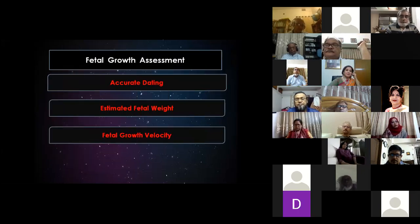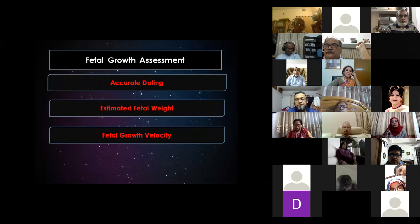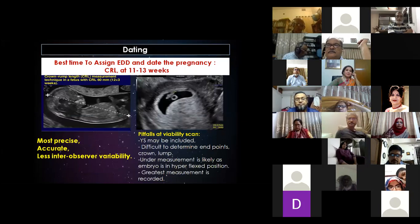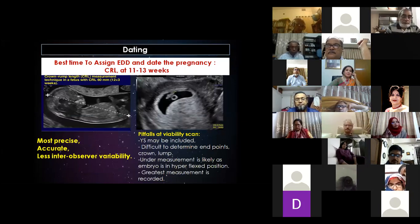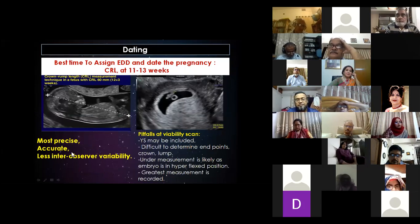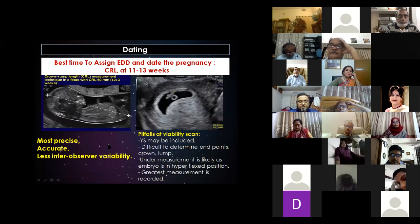Accurate dating, correct estimation of fetal weight, and fetal growth velocity play a crucial role in fetal growth assessment. The best window for dating is 11 to 13 weeks by measuring the CRL because it is most precise, most accurate, and has less inter-observer variability.